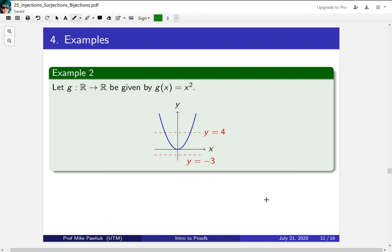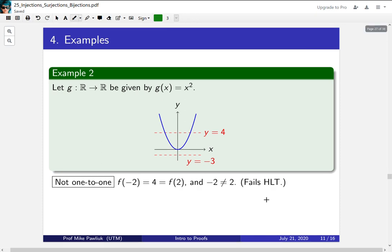Now let's look at another example. Let g be the function from the reals to the reals, given by g(x) = x². Is it 1-to-1? It's not 1-to-1, because there are two different x values, -2 and 2, such that when you plug them in, you get the same y value. So two different x values that give you the same y value, and we illustrated that right here. So this is an example of how the function fails the horizontal line test.